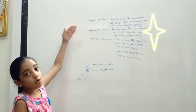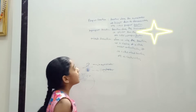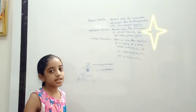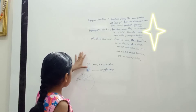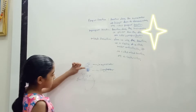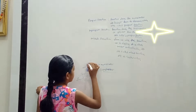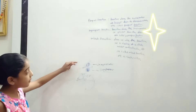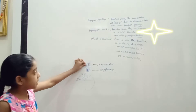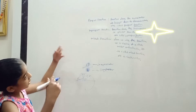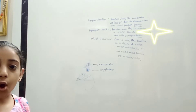Now let's go to improper fractions. Improper fraction is similar but the meaning is different. We have 6 pieces, but I have taken 10 pieces. How is that possible? Because the numerator is a bigger number than the denominator. This is called an improper fraction.